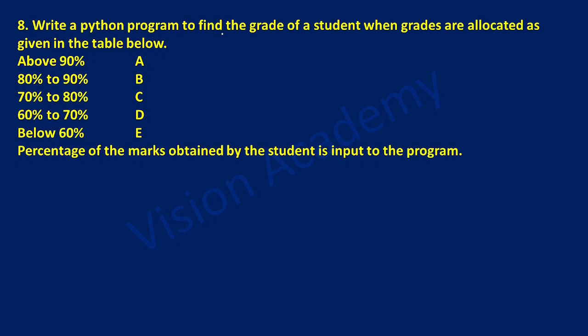Write a Python program to find the grade of a student when grades are allocated as given in the table below. Above 90% is grade A, 80% to 90% is grade B, 70% to 80% is grade C, 60% to 70% is grade D, and below 60% is grade E.